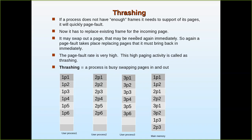Let us consider a user process with pages one, two, three, four, and five. In main memory, only three pages of this process are loaded. Similarly, for a second process, pages one, two, and three are loaded; and for a third process, pages one and two are loaded. Now let us imagine that all the frames in main memory are allocated — there are no free frames.